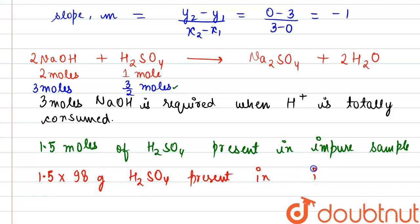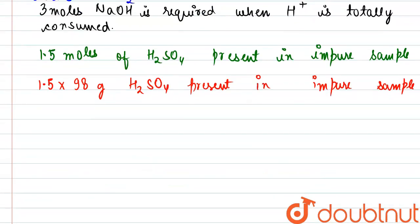...is present in impure sample. So it will come out to be 147 grams of sulfuric acid present in impure sample.